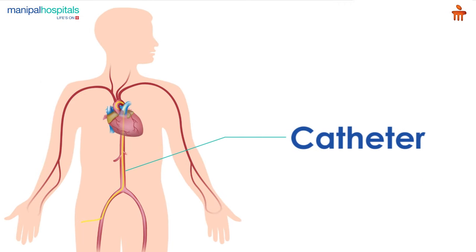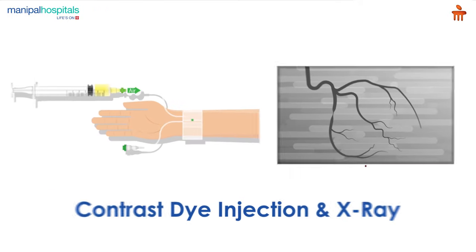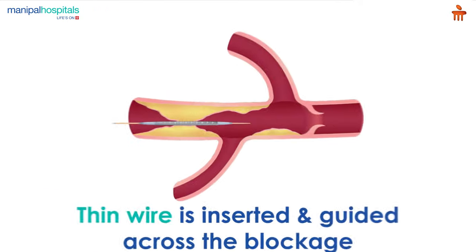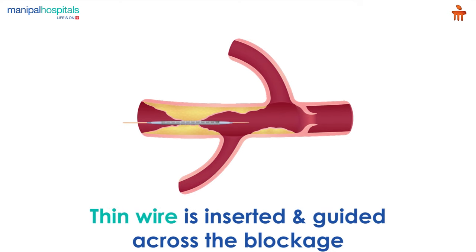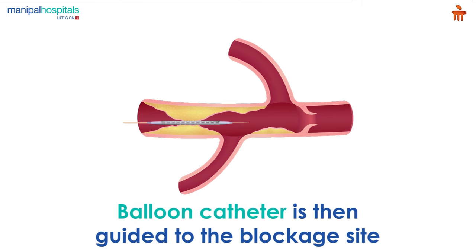The catheter is guided into the artery and to the aorta. A contrast dye is injected and an x-ray is taken. If a treatable blockage is found, a thin wire is inserted and guided across the blockage.